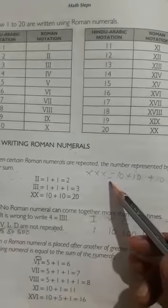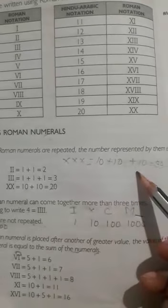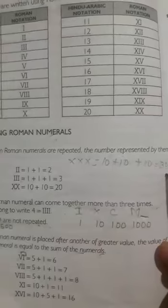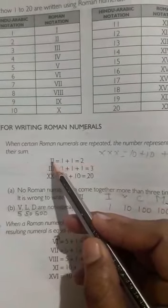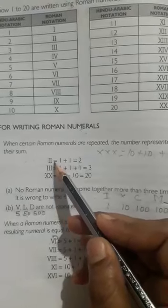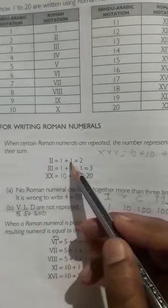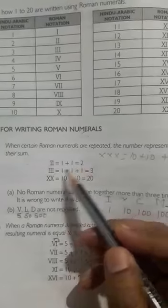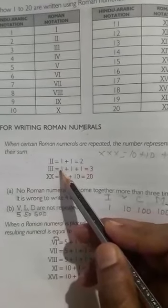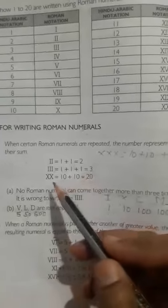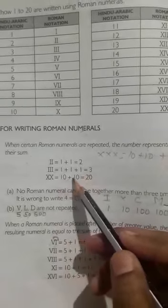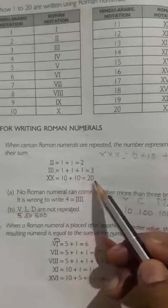XXX is equal to 10 plus 10 plus 10, that is 30. II is equal to 1 plus 1, equals 2. III is equal to 1 plus 1 plus 1, equals 3. XX is equal to 10 plus 10, equals 20.